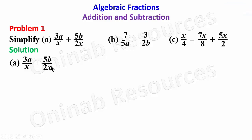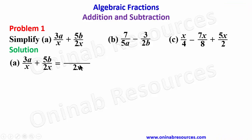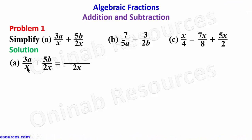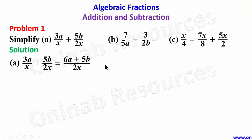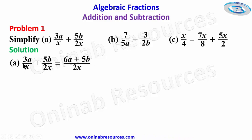The LCM of x and 2x is 2x. We now use this LCM of 2x to divide x, which is the first denominator — that gives 2. Two times 3a gives 6a. Again, 2x divided by 2x gives 1, so 1 times 5b gives us 5b. So we put the connector plus 5b. There's no way we can simplify this further, so this is the simplest form: (6a + 5b) over 2x.